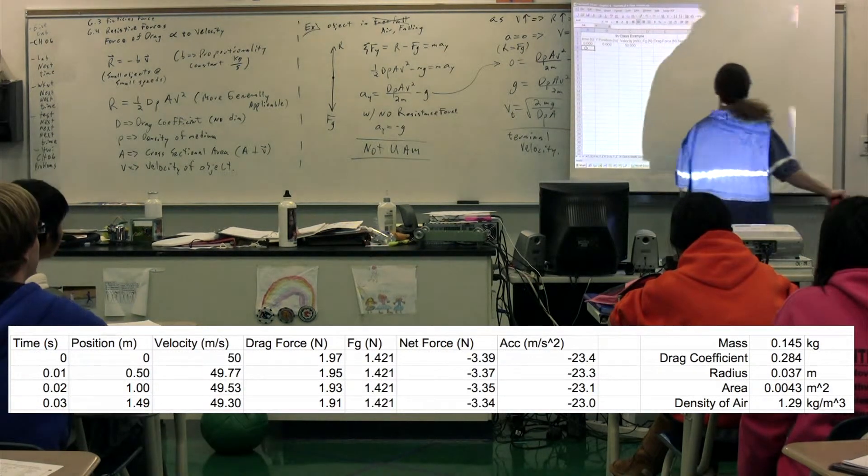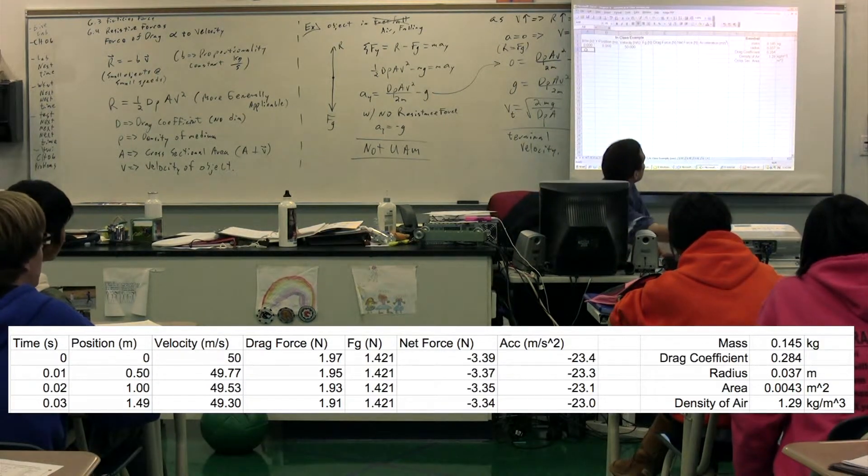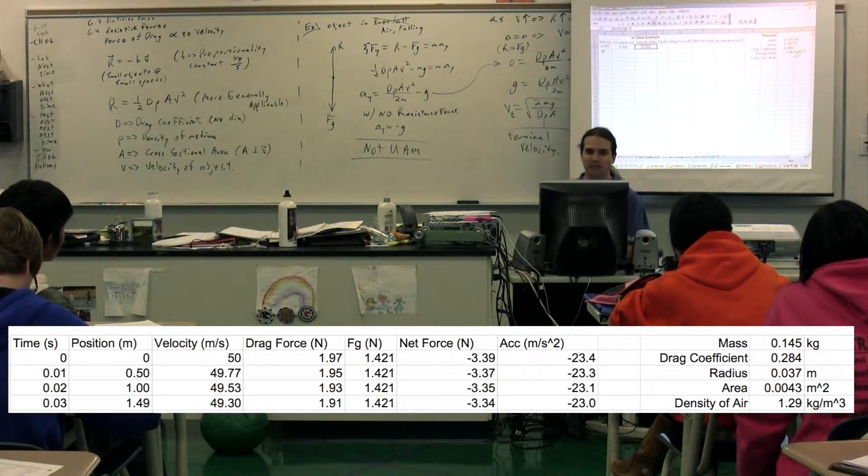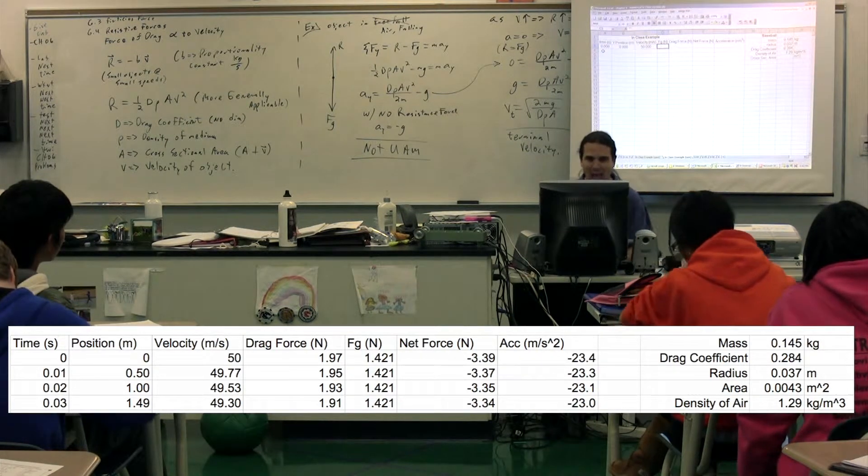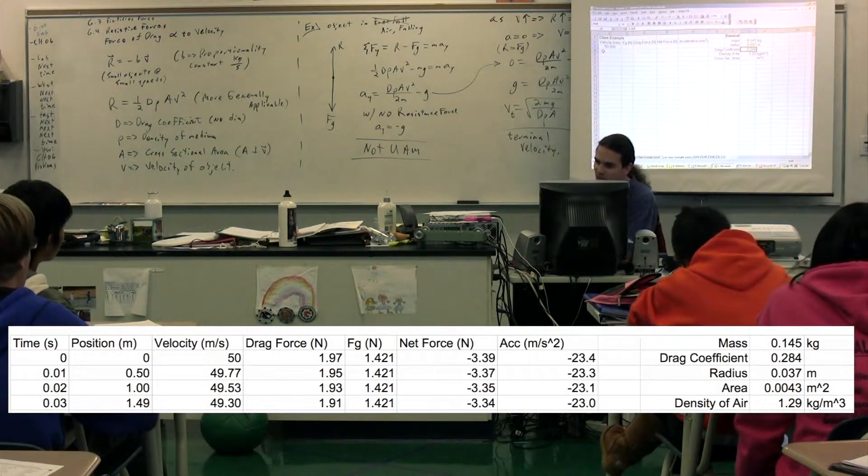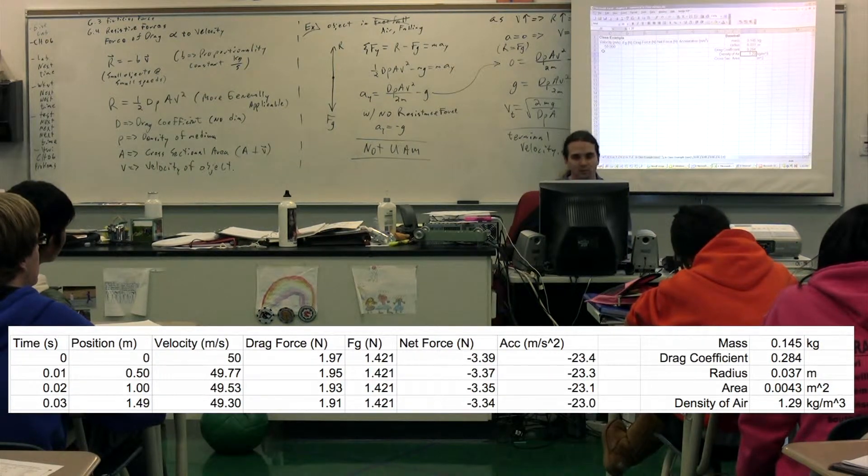We have our initial time, we're going to say, is zero. Our initial position, we're going to say, is zero. Initial velocity is 50. We have some information about the baseball here. We have the mass, the radius, the drag coefficient. We have the density of the air, 1.29 kilograms per meters cubed.